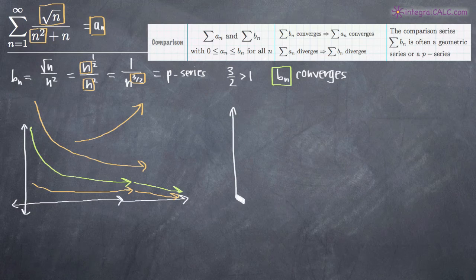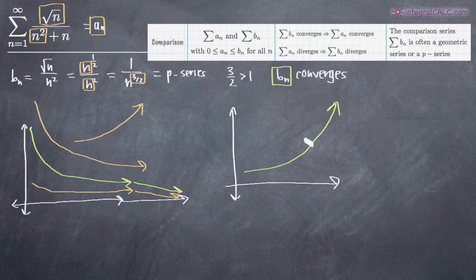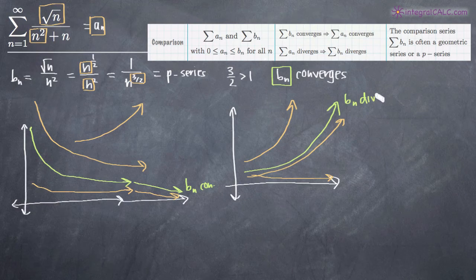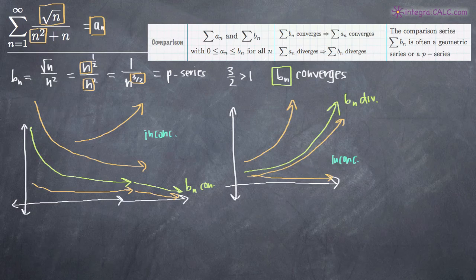If b sub n diverges and a sub n is larger than b sub n, we know a sub n also has to diverge. If a sub n is less than b sub n when b sub n diverges, the test is inconclusive — a sub n could diverge or converge. So to summarize: when b sub n converges, we need a sub n to be smaller than b sub n; when b sub n diverges, we need a sub n to be larger than b sub n for the test to be conclusive.